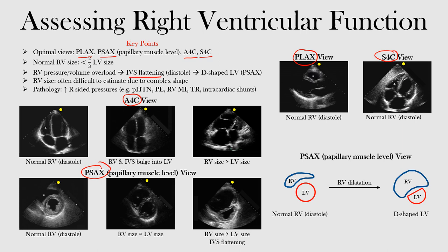We can specifically see that in diastole, and this results in a D-shaped left ventricle. Looking at the parasternal short axis view at the papillary muscle level, this is a normal right ventricle during diastole — there's your right ventricle, your RV, and this is your left ventricle, the LV. Notice the size of them.